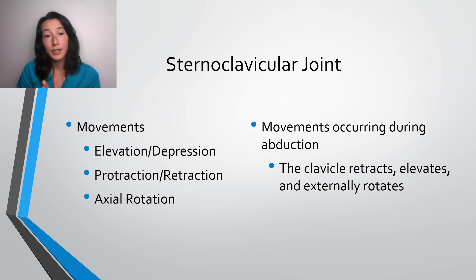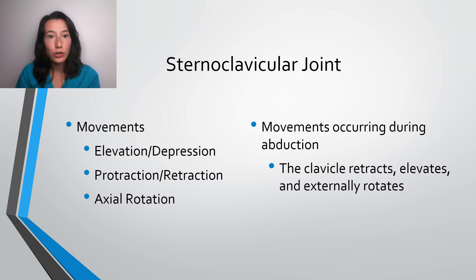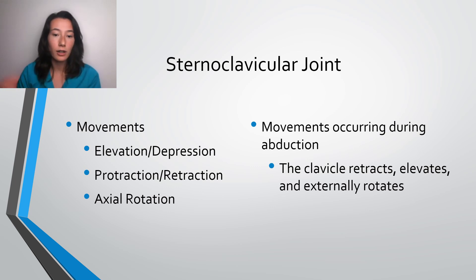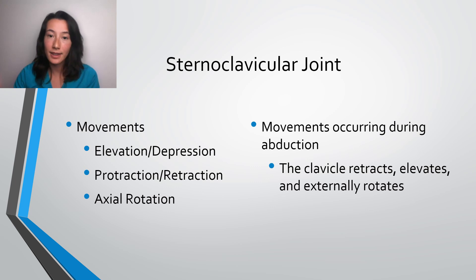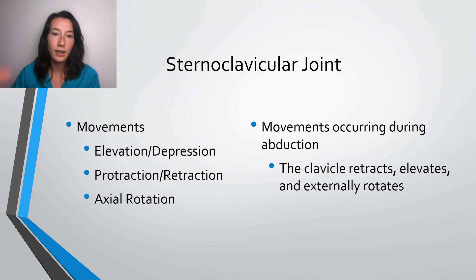Let's talk about the sternoclavicular joint first. Movements that can occur at this joint include elevation, depression, protraction, retraction, along with axial rotation. Now, when we move our shoulder into abduction, what happens at this particular joint is that the clavicle will retract, it's going to elevate, and it's going to externally rotate in order to really get that full range of motion into shoulder abduction.